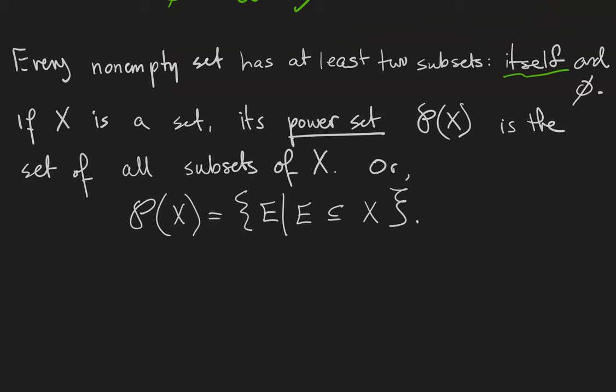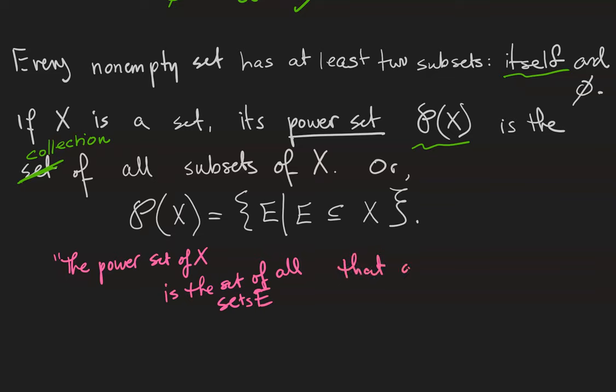If X is a set, its power set, P(X), is the set of all subsets of X. And so that we can avoid the use of the word 'set' twice in a row, we actually like to call these collections or families instead. The power set of X is the set of all sets E that are subsets of X.